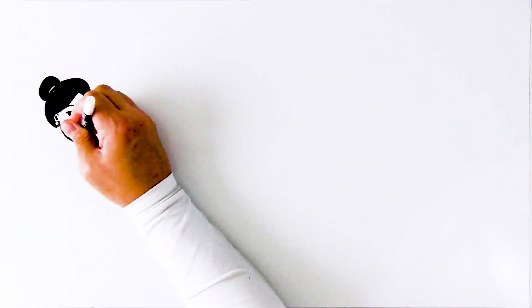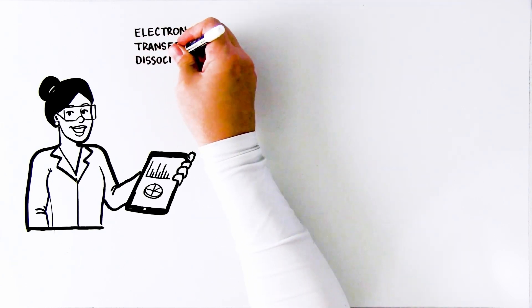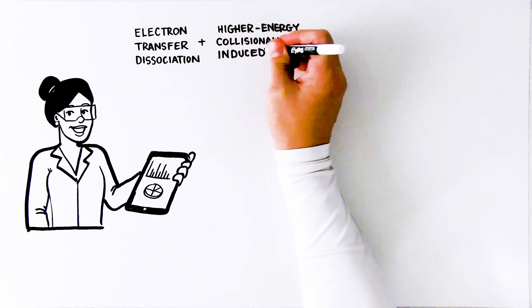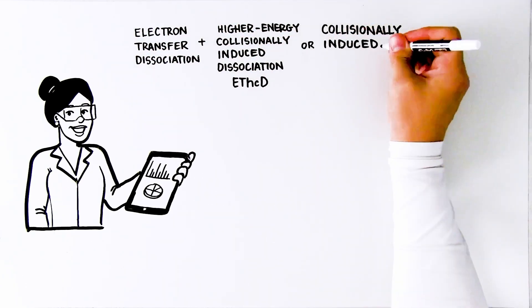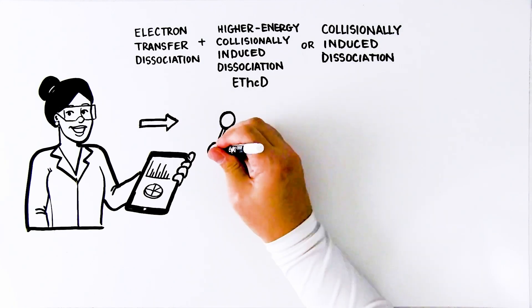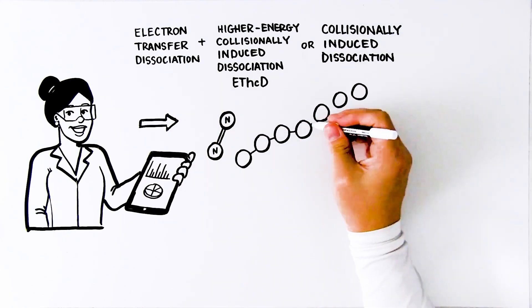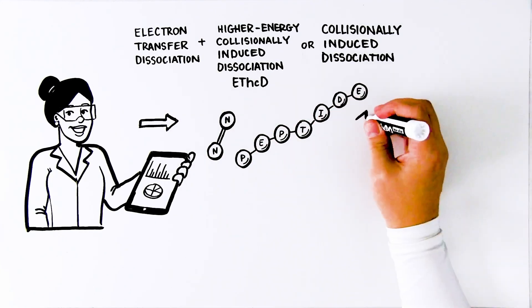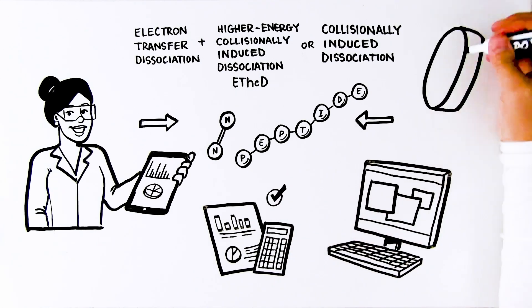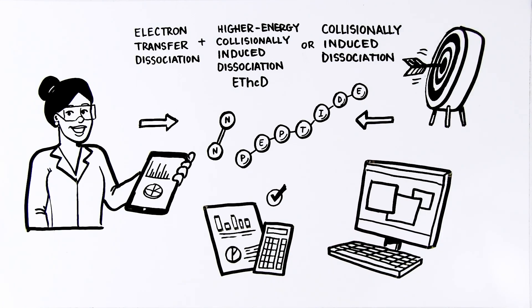ETD functionality is further enhanced by combination with supplemental activation, resulting in higher fragment yield and some collision-based fragment types. This technique combines the softness of ETD with the energy of collision-induced dissociation, generating a more comprehensive analysis of the sample and offering greater insight into the protein structure.